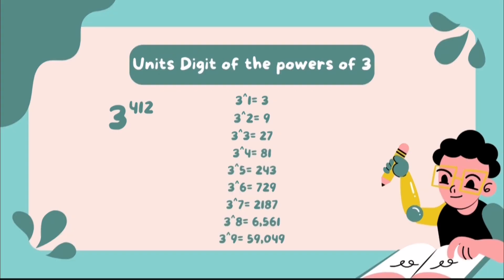3 raised to 1 equals 3. 3 raised to 2 equals 9. 3 raised to 3 equals 27. 3 raised to 4 equals 81. 3 raised to 5 equals 243. 3 raised to 6 equals 729. 3 raised to 7 equals 2,187. 3 raised to 8 equals 6,561. 3 raised to 9 equals 59,049.